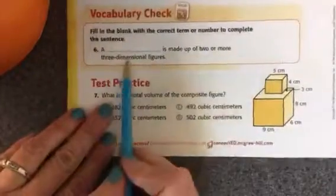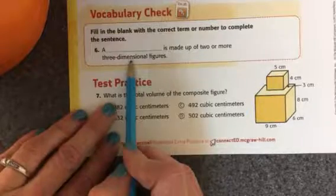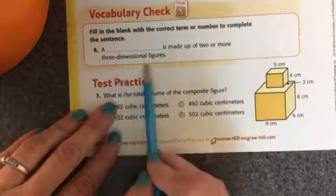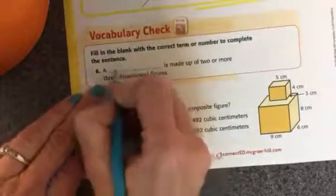Okay, fill in the blank with the correct term or number to complete the sentence. A blank is made up of two or more three-dimensional figures. Okay, we call that...